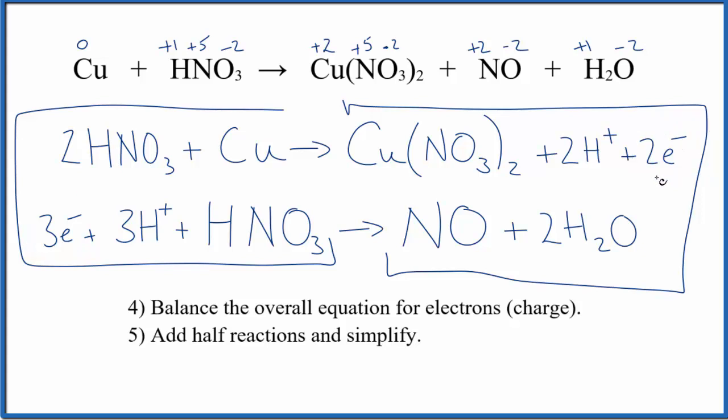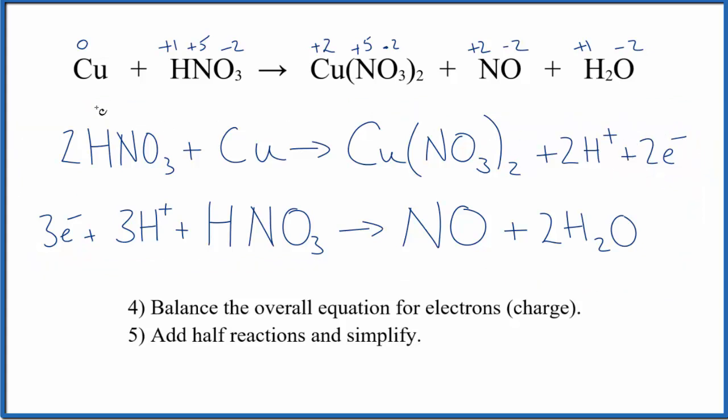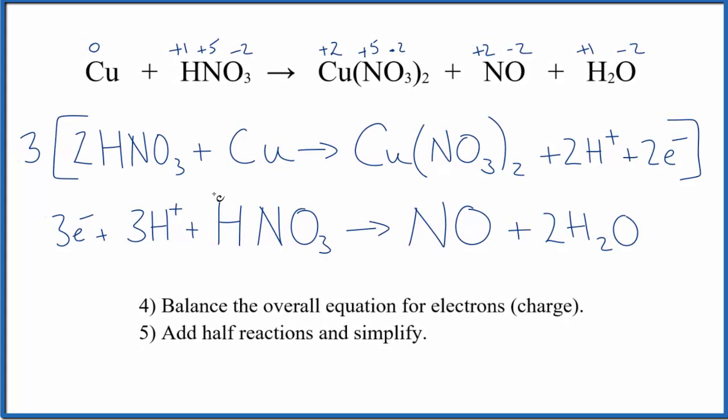The way we balance that is we're going to multiply the top, this whole thing here, by three, because three times two will give us six electrons. Then down here, we multiply everything by two, two times three, that'll give us six electrons. So we'll balance the electrons.